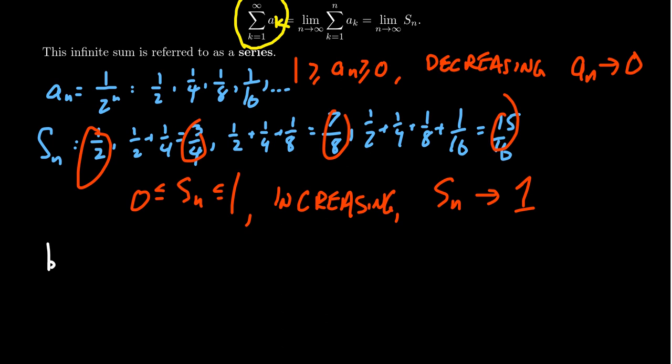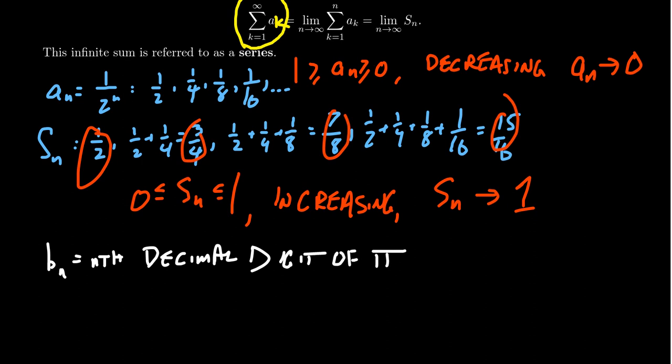Take as another example, the sequence b sub n, whose nth entry is going to equal the nth decimal digit of the number pi. So let's see, if pi is 3.1459.